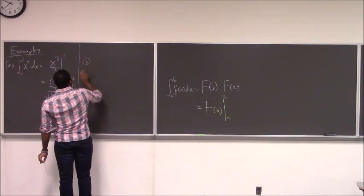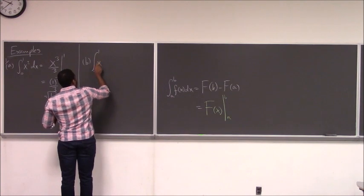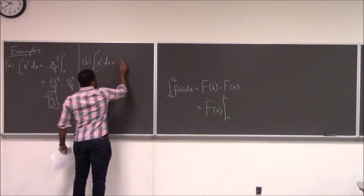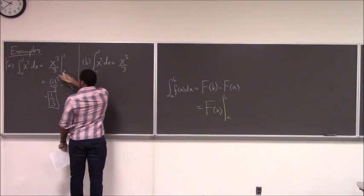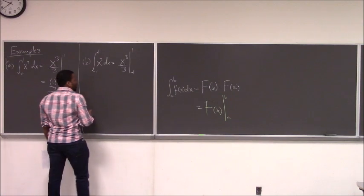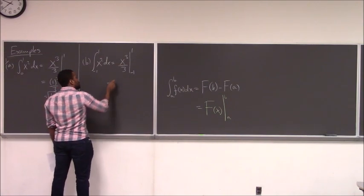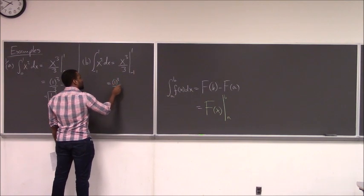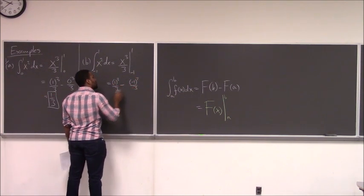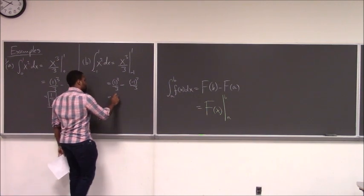Similarly, for example 1B, we look at the integral from minus one to one of x squared dx. This is going to be x cubed over three — it's the same anti-derivative. Except here we're plugging in one and minus one. Plugging in one gives one cubed over three, and that actually gives you two-thirds.